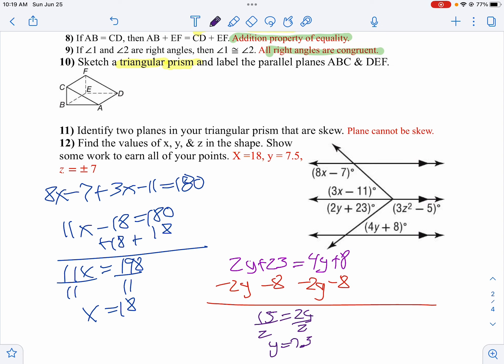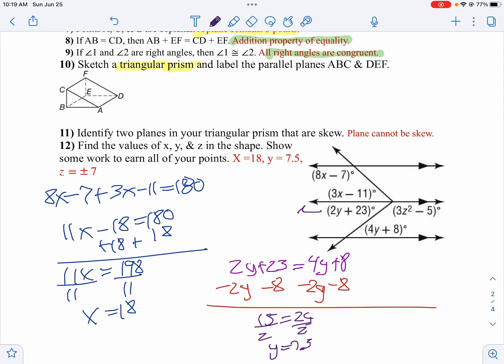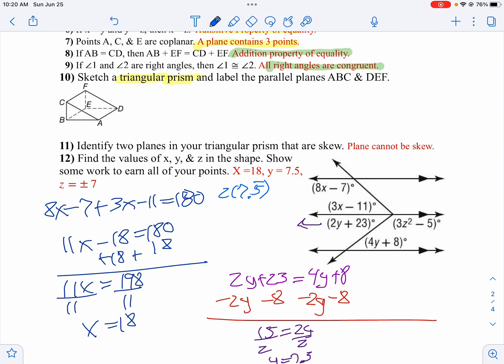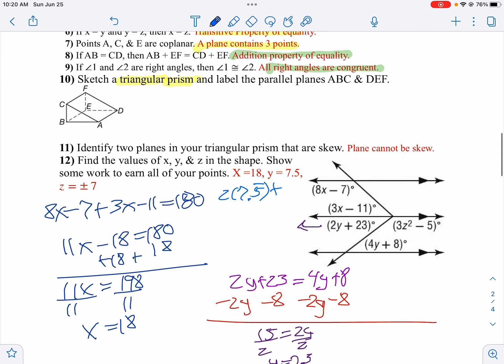Now how do you find z from there? There's a couple different ways I could find z. I think maybe what I'll do is I'll go back and find the value of my angles with y. So 2y, so 2 times 7.5 plus 23. So I get 15 plus 23.